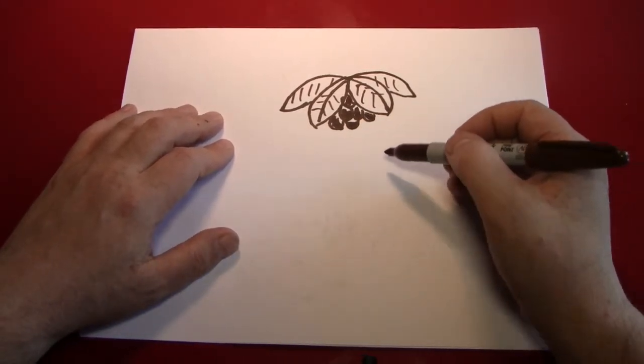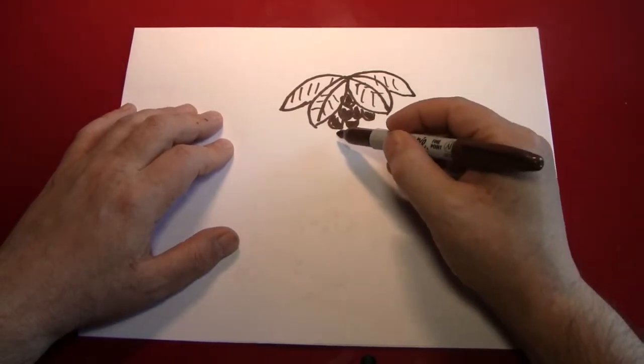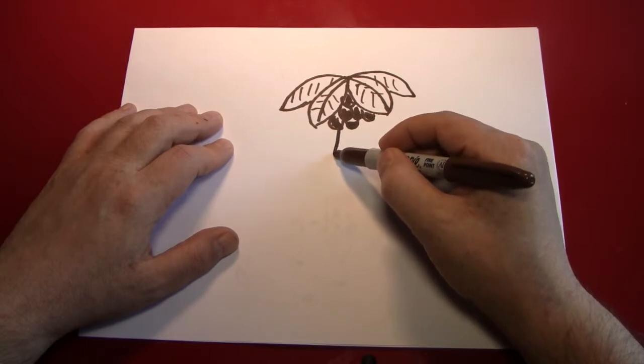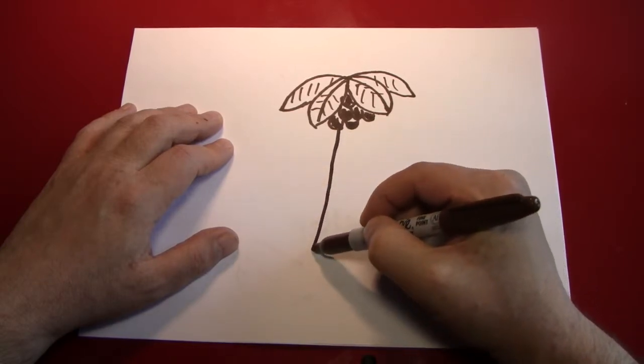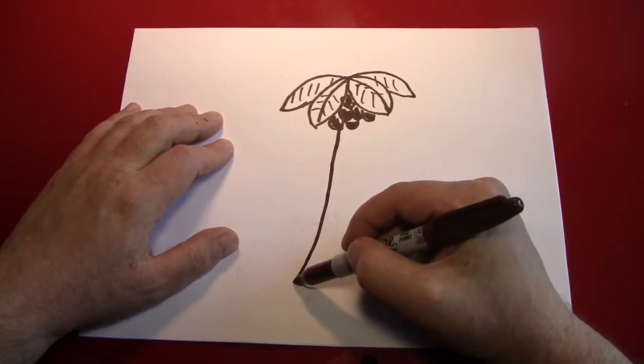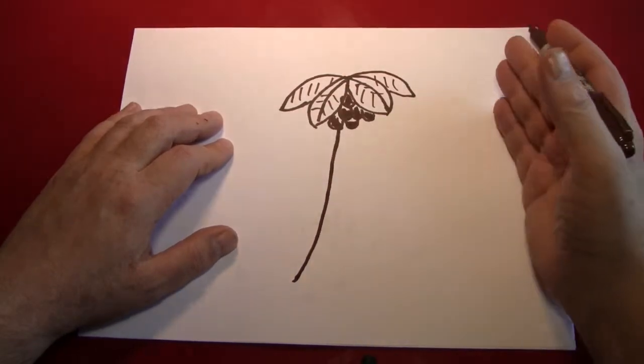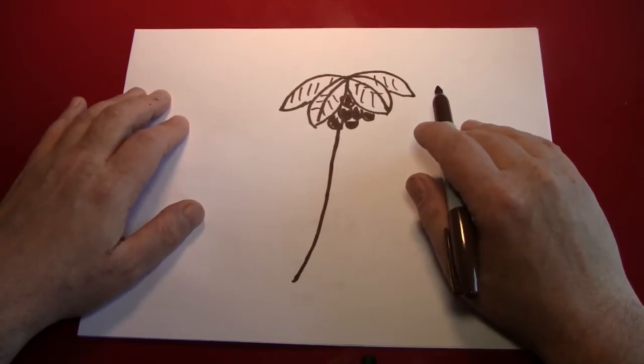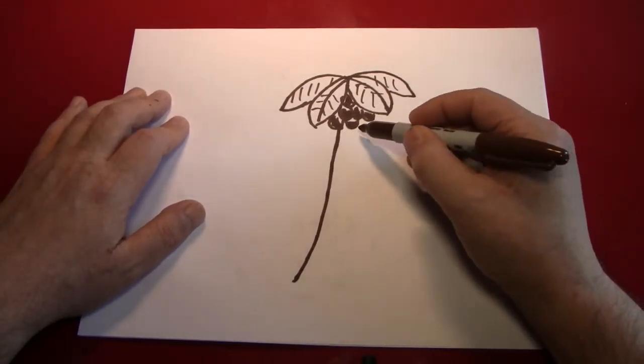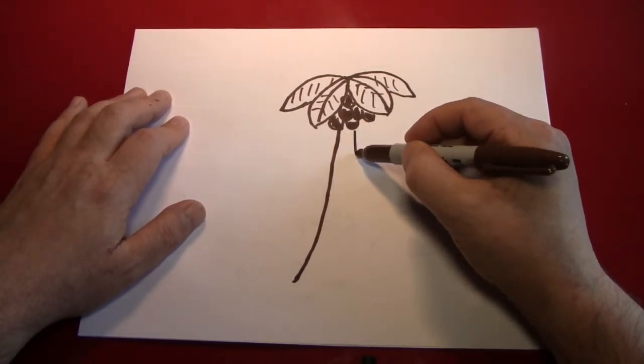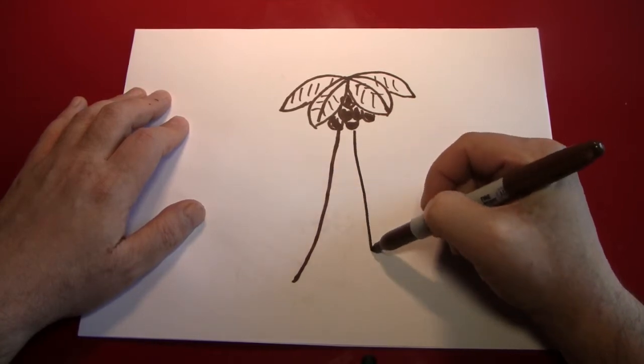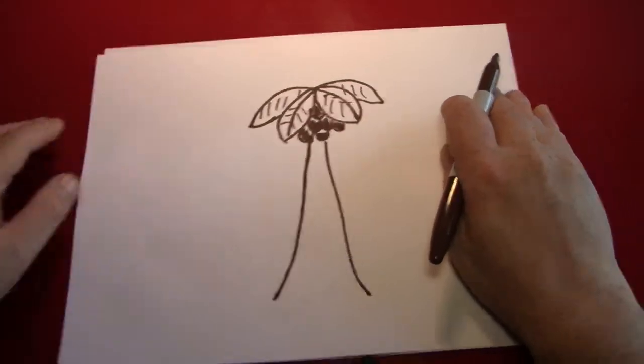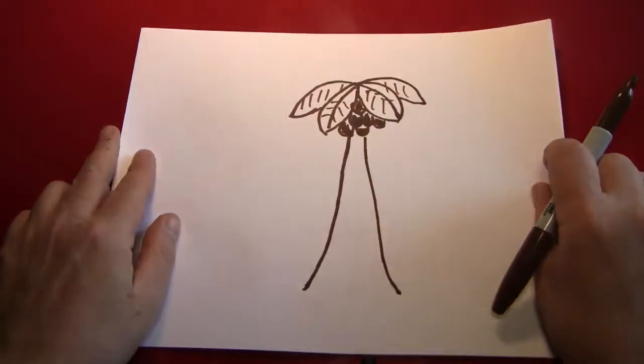Next all we need is the trunk of the tree. Start over here. Just bring a nice straightish curved line down like that. And don't worry. Palm trees are very bendy. They're very flexible so you can be kind of flexible with the way you draw them. Bring down another line. And there you are.